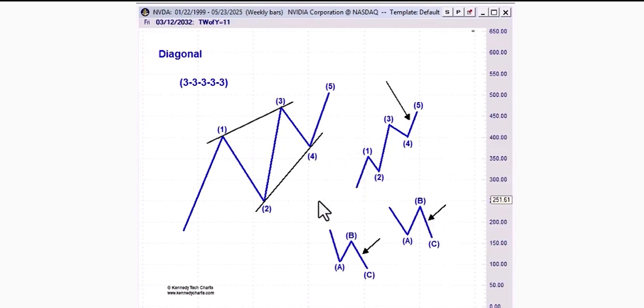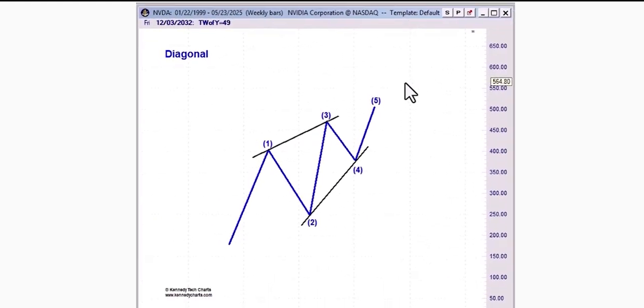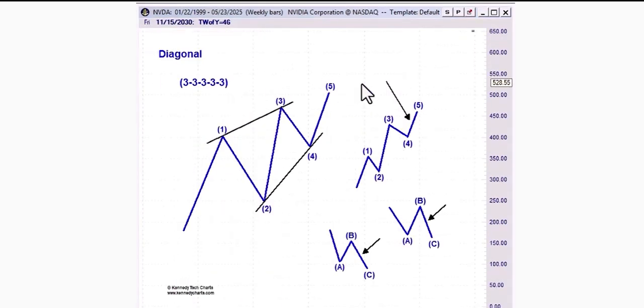So whenever you're looking at a price chart and you think that you see ending diagonals everywhere, before you assume and jump to the conclusion and embrace the idea that yes, that is indeed an ending diagonal, you need to make sure the subdivisions are appropriate, it has the right look, and it does indeed adhere to the rules and guidelines of the wave principle. Also make sure it's in the right position.